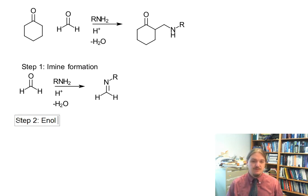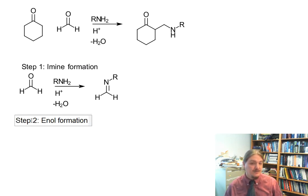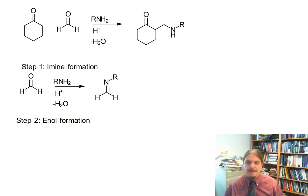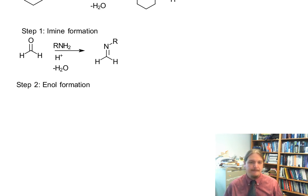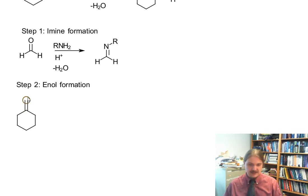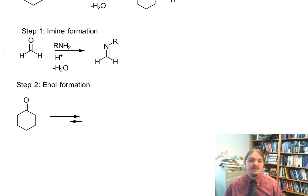Step two: enol formation. We're in acid, and acid facilitates the equilibrium between a ketone and its enol tautomer.